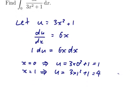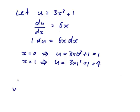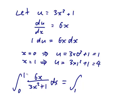And I reckon I can replace everything with u's now. So the integral from 0 to 1 of 6x over 3x squared plus 1 dx will be the integral from... Now the x equals 0 becomes a u equals 1. The x equals 1 becomes a u equals 4.